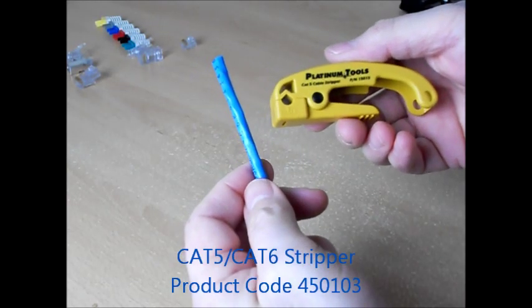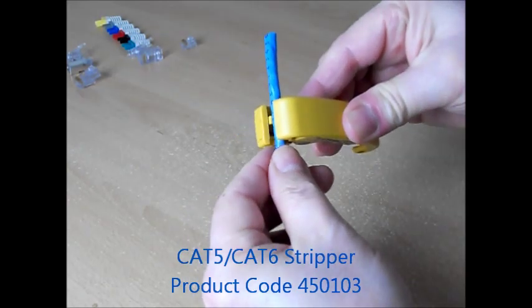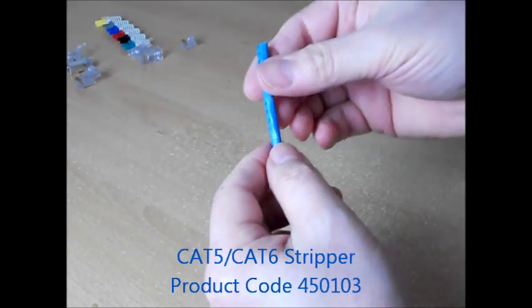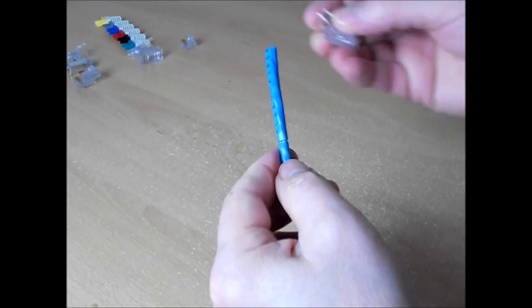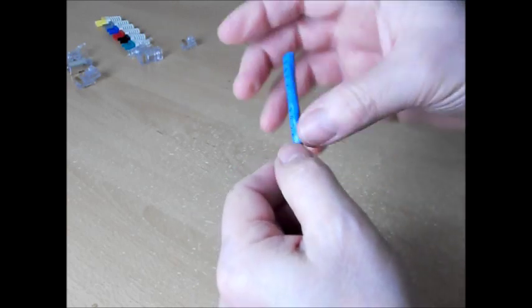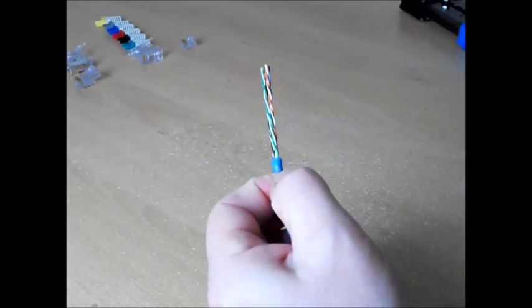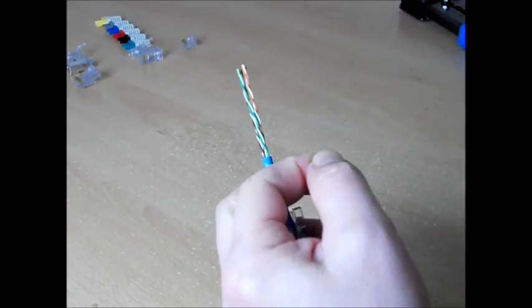This is the cable stripper that I'm using today. It clamps onto the cable, just needs one or two revolutions to score the outer casing, fit the strain relief, snap off the outer, trim the nylon, then separate out the pair.